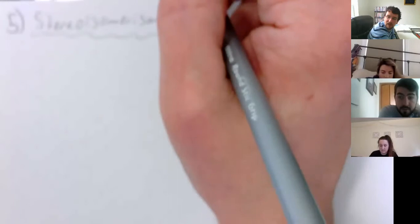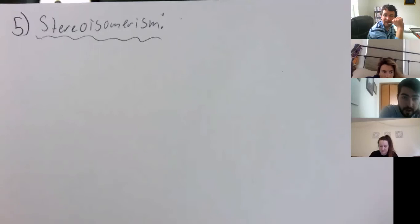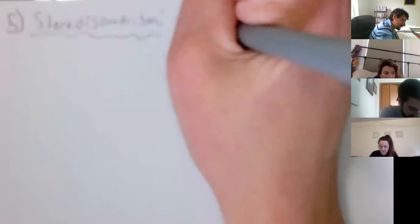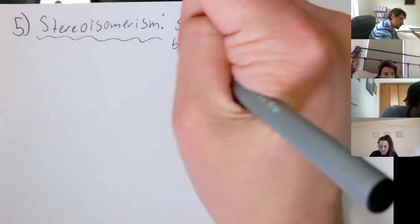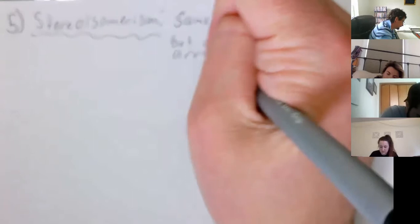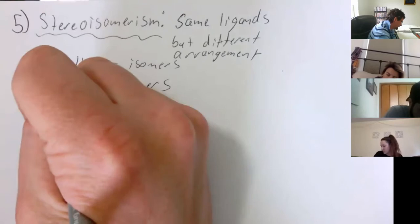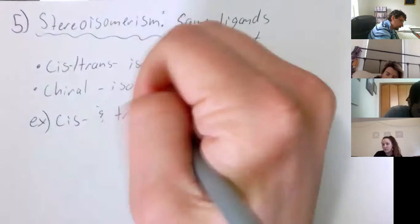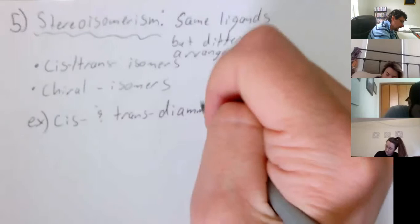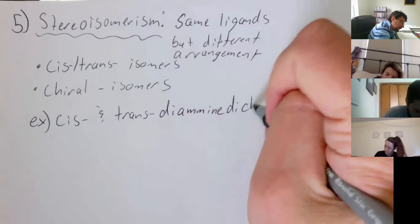So stereoisomerism includes things like cis/trans isomerism and chiral isomers. An example of cis and trans: platinum(II) — we're looking at diamminedichloroplatinum(II).